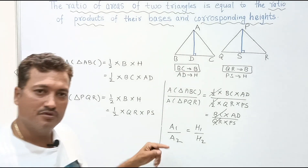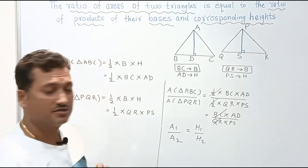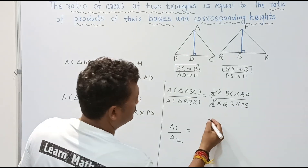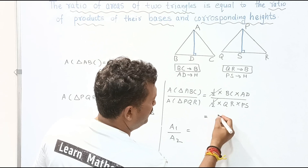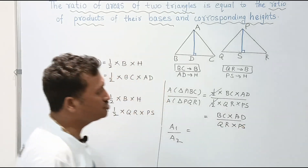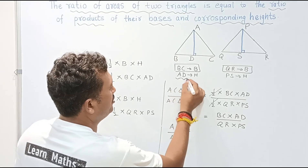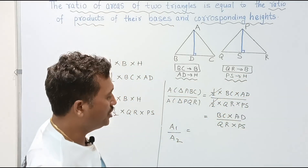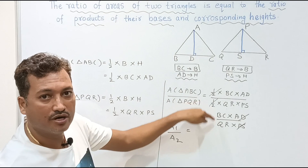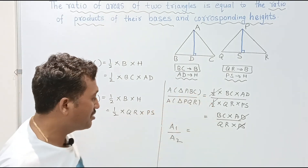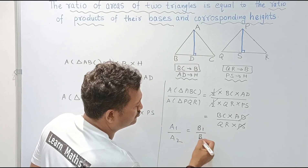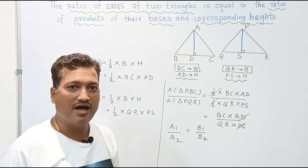This property applies when the two triangles have the same base. It is also possible that the two triangles have the same height with different bases. If height AD equals height PS, then AD and PS cancel, leaving BC upon QR. So A1 upon A2 equals B1 upon B2 — the ratio of their corresponding bases.